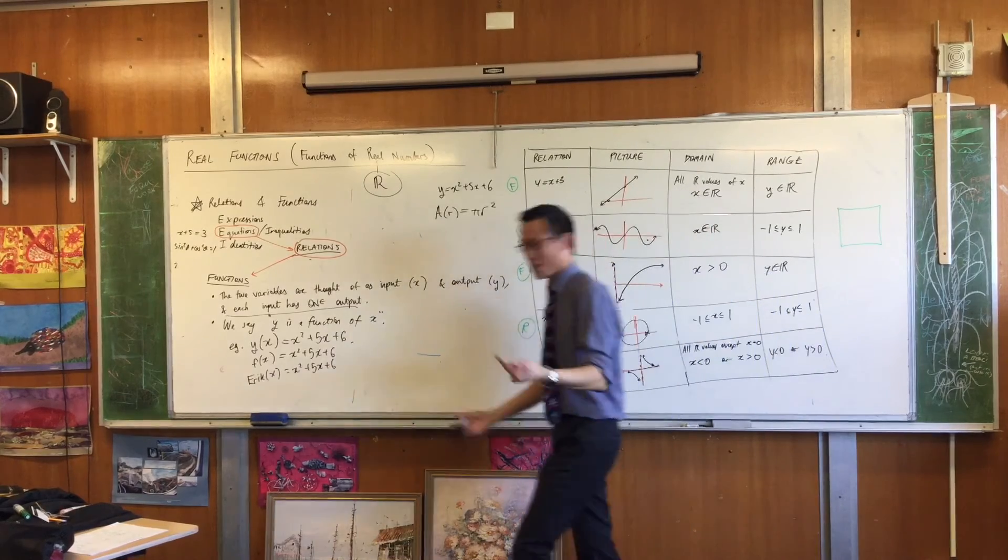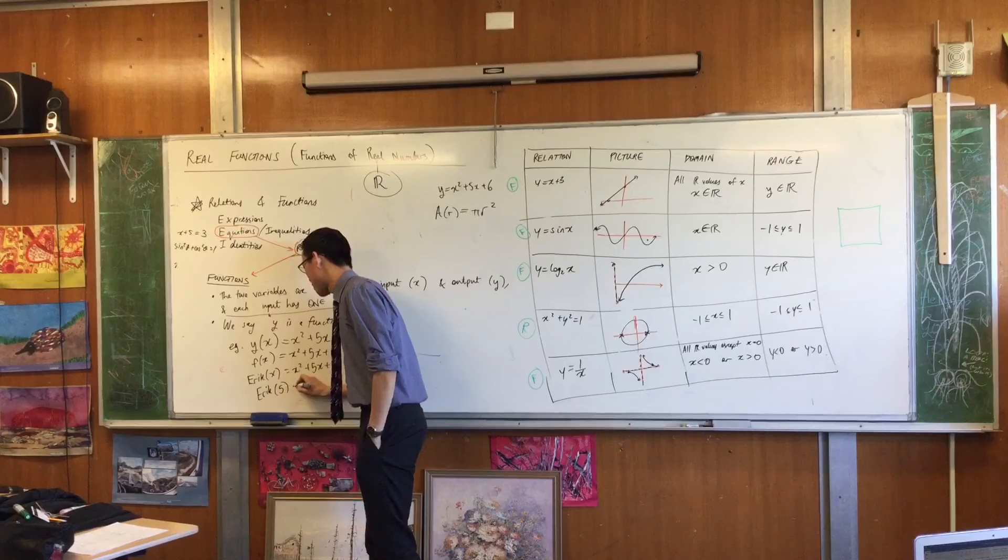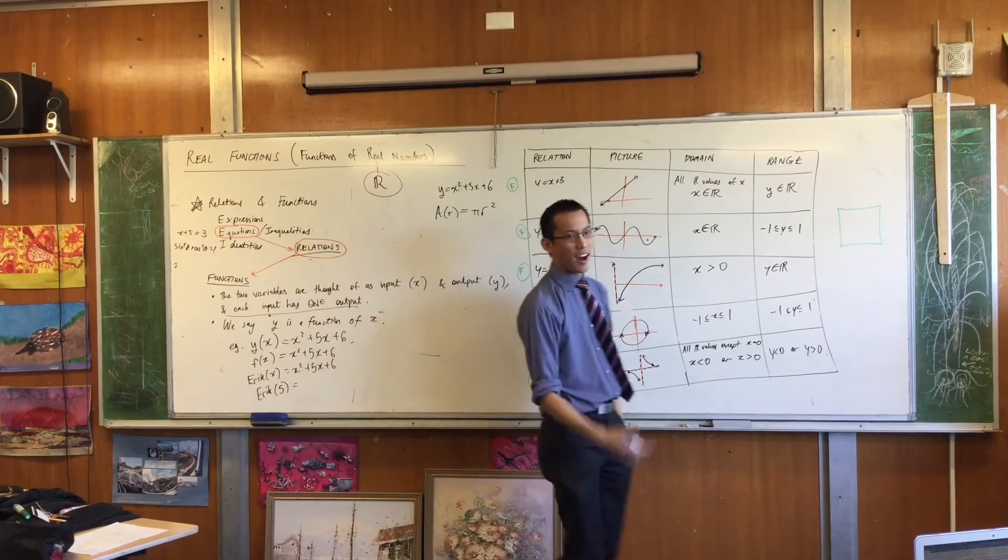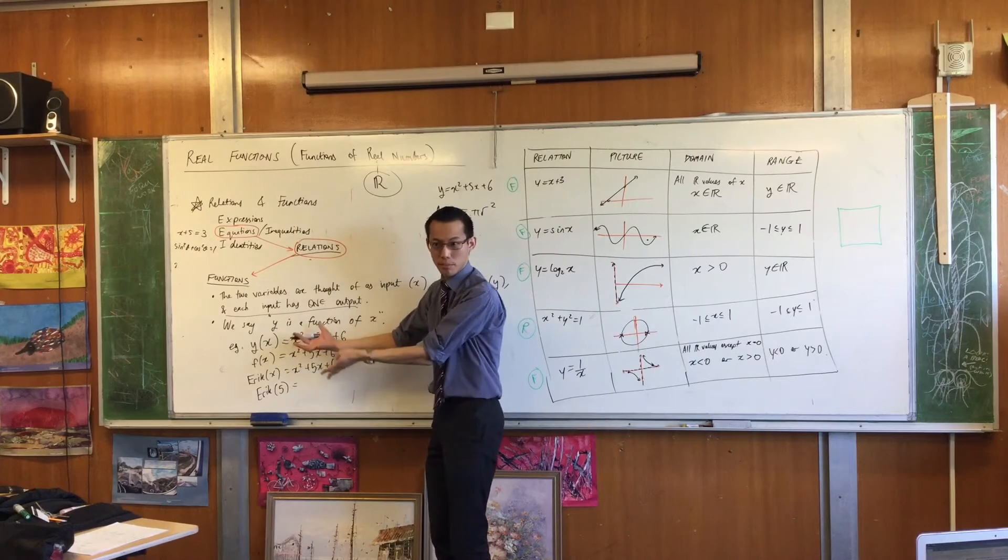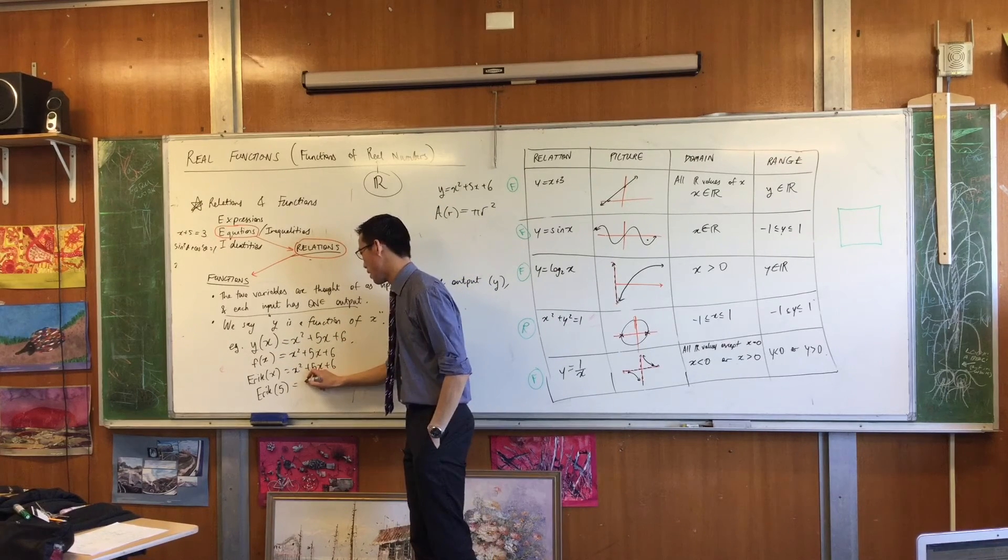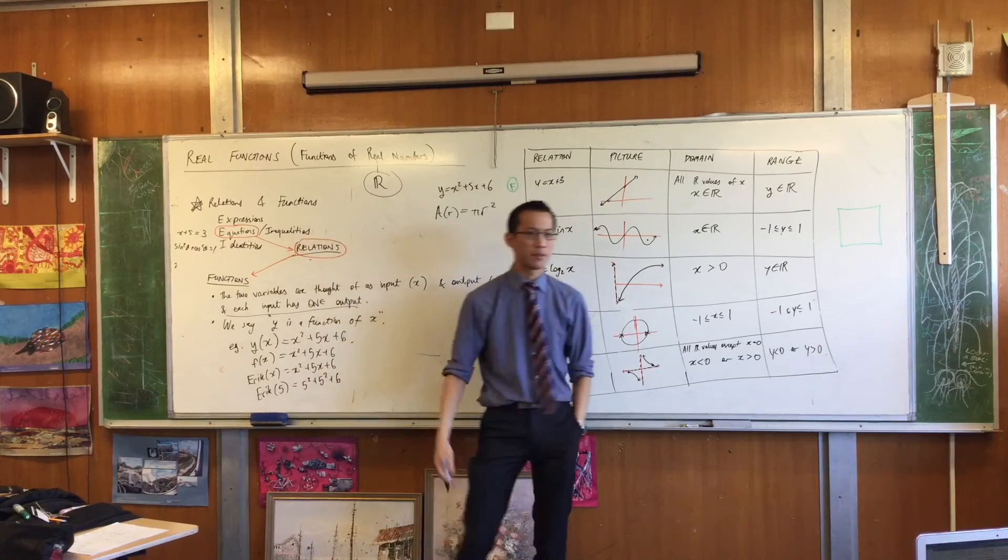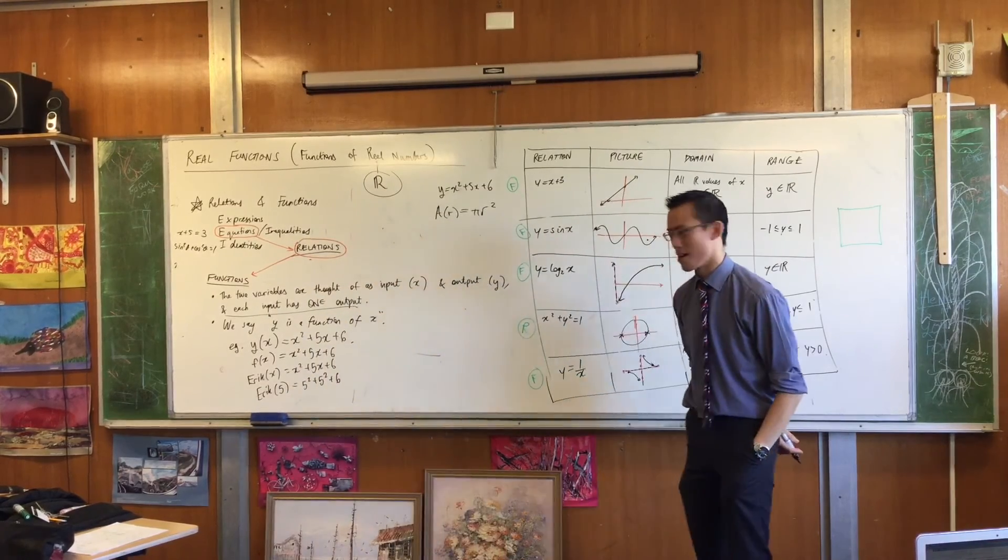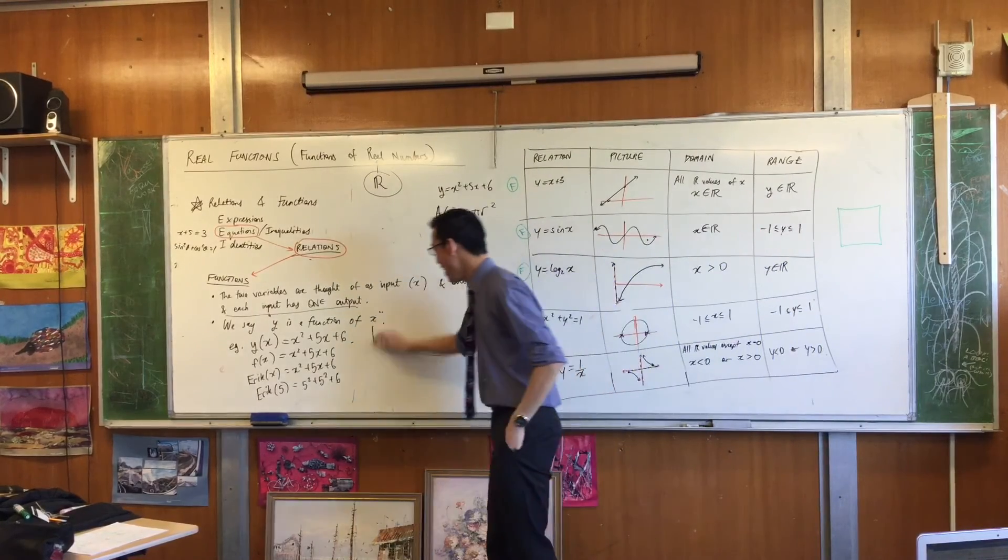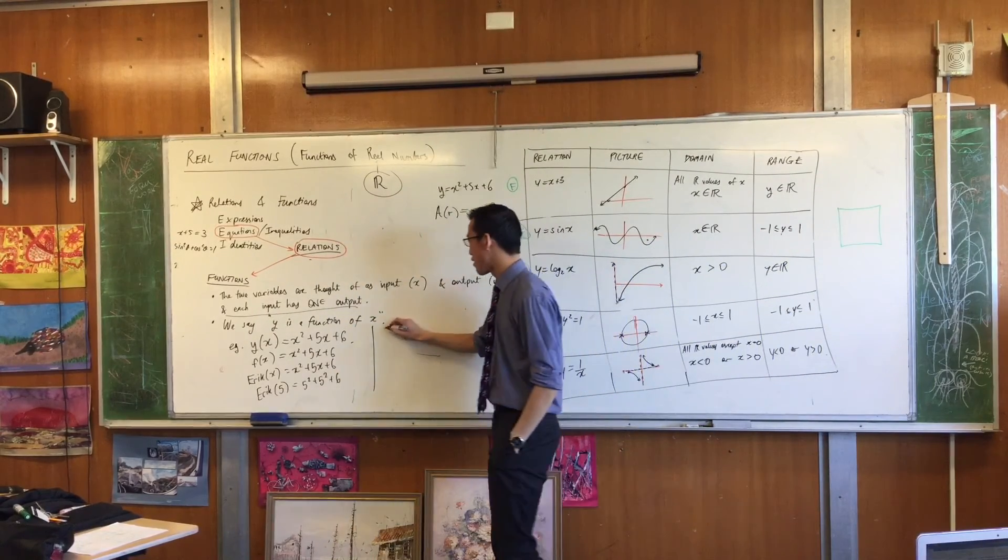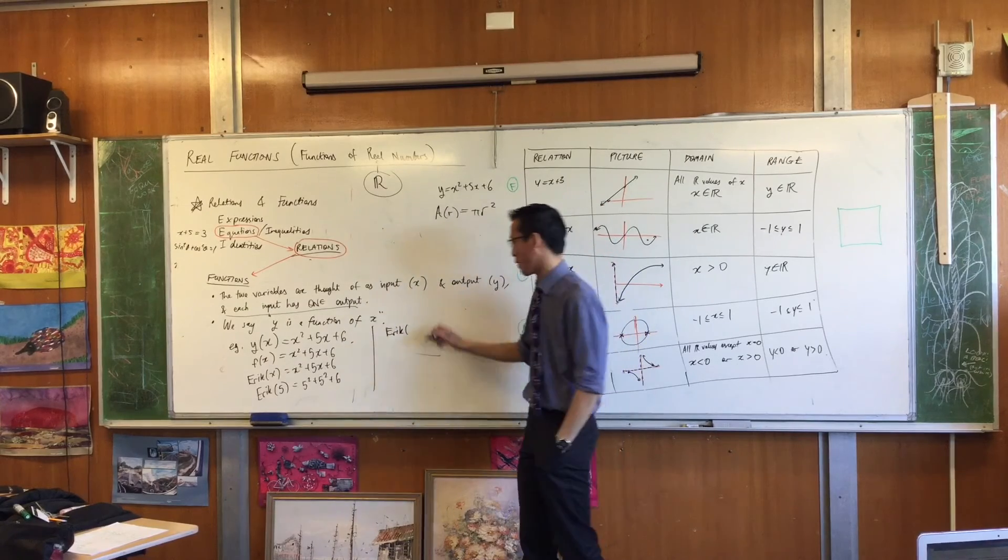So for example, I'm just going to run with it. I can say Eric of five. What would that mean? I would take the number five, and I'd place it into the function in place of X. So it would be five squared plus five squared plus six. So it would be 56. Eric of five is 56. You don't have to put just numbers in it.